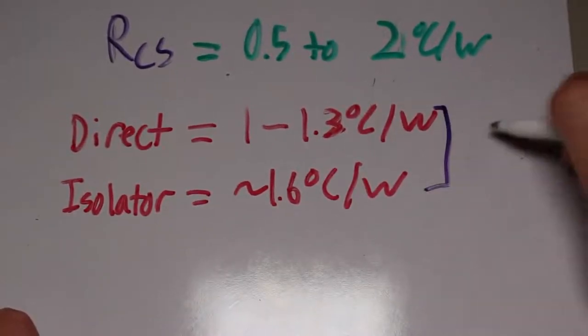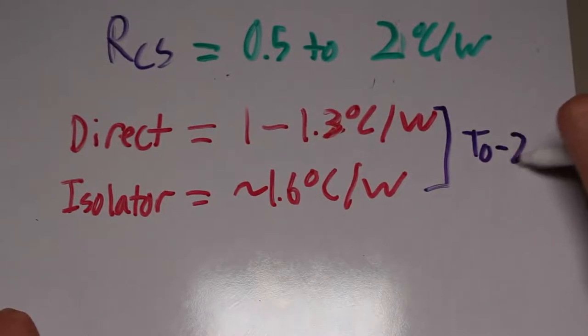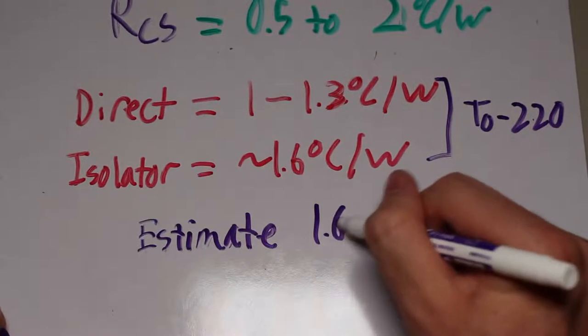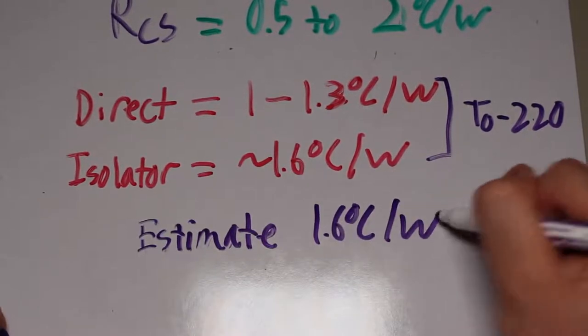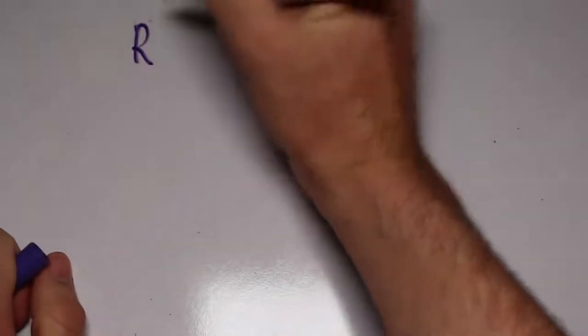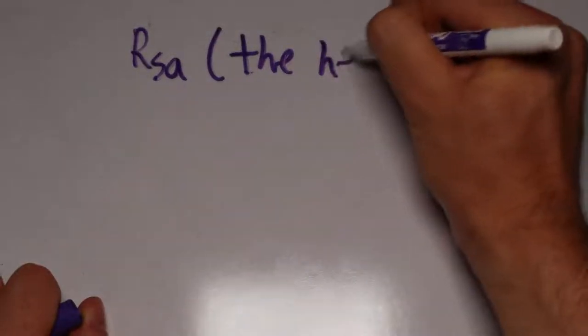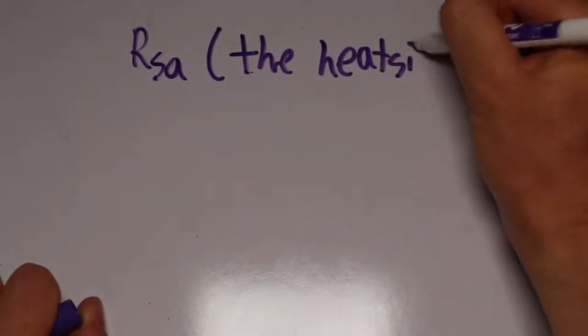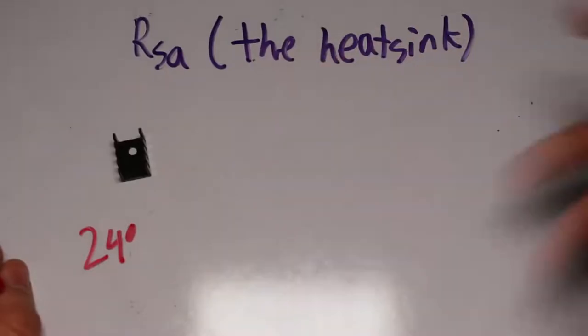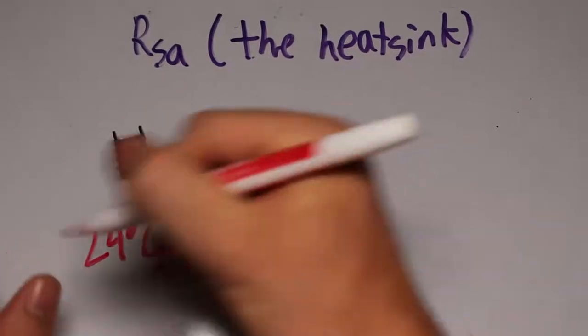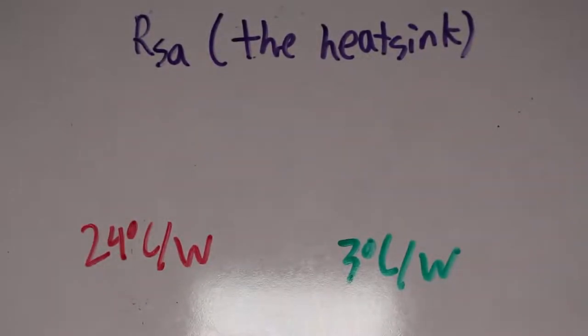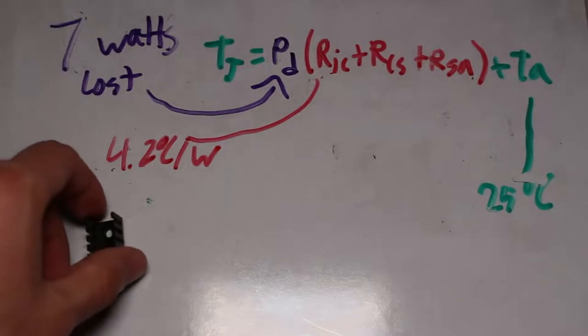If you are ever unsure, or just don't want to run the calculations, you can likely safely pick a case-to-surface resistance of about 1.6, considering that you are using the proper mounting methods. Finally, we need to find the surface-to-ambient resistance. This is actually very easy if you have access to the heatsink datasheet. I have a few heatsinks here that range from 24 degrees per watt all the way down to 3 degrees per watt.